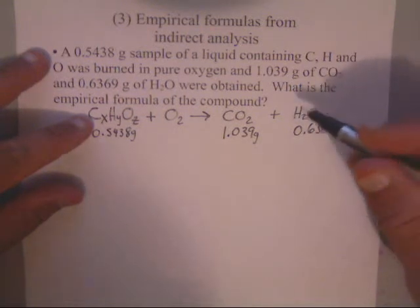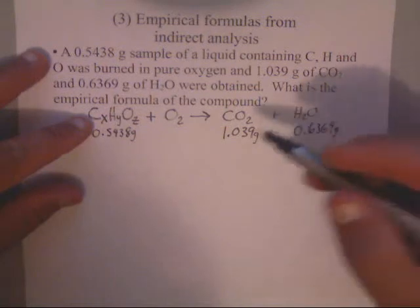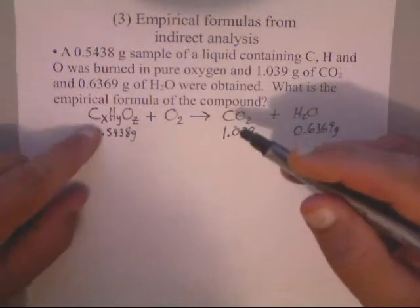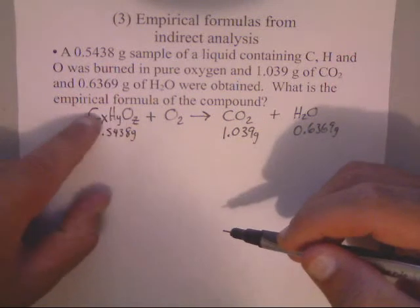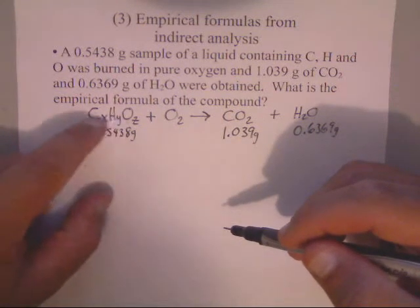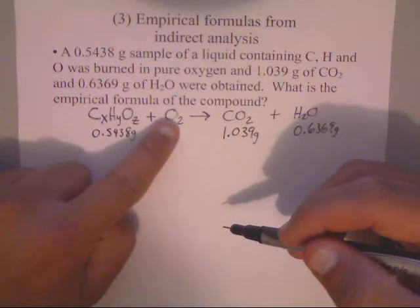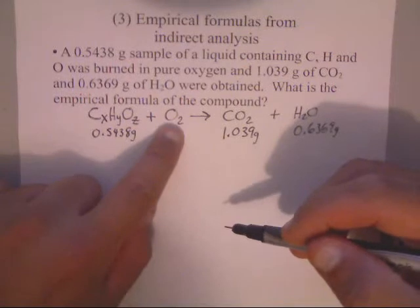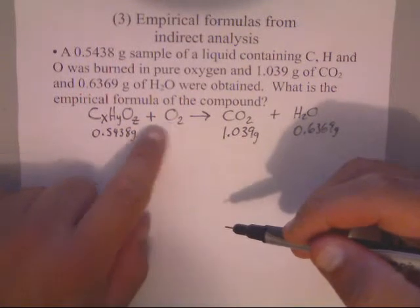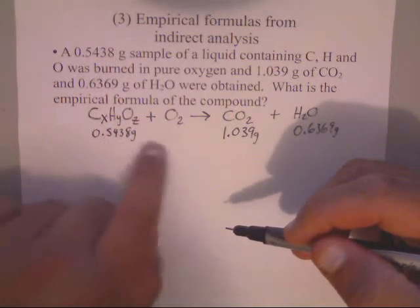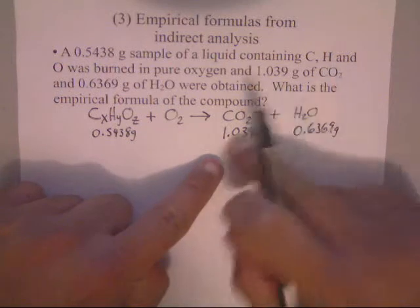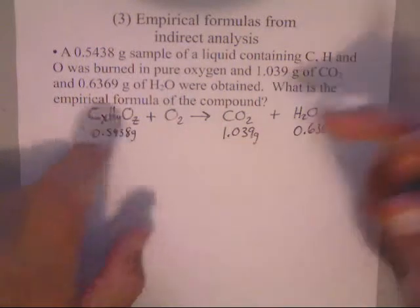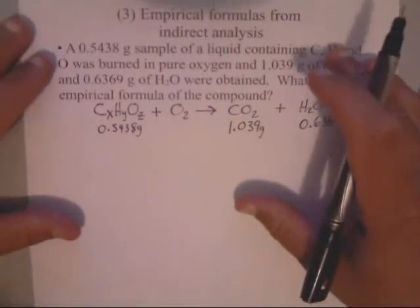First, what we're going to do is we're going to find out how many carbons in grams we can get out of this and how many in grams of hydrogen we can get out of this. If I can figure out how many hydrogens in grams are here and how many carbon there are in grams here, then that helps me find these missing two pieces. So therefore, I can just subtract what I end up having from these two in total carbon and oxygen from this guy. So let's get started.